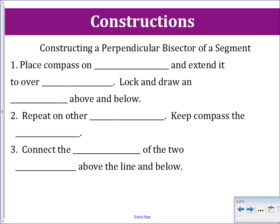To begin, we are going to be given a segment. The only good place to put our compass is on an endpoint. Our goal is to construct a perpendicular bisector — bisect means we are going to cut it in half. Whenever we do any construction that involves cutting something in half, we need to extend our compass over halfway to the other side. Always try and visualize what you're doing, and that is going to help you figure out where to go next.